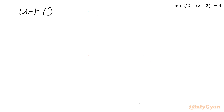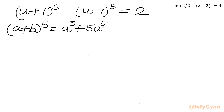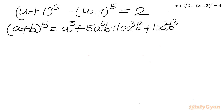We need to expand (u plus 1) whole power 5 minus (u minus 1) whole power 5 equals 2. The general expansion of (a plus b) whole power 5, using coefficients 1, 5, 10, 10, 5, 1, is: a⁵ plus 5a⁴b plus 10a³b² plus 10a²b³ plus 5ab⁴ plus b⁵.